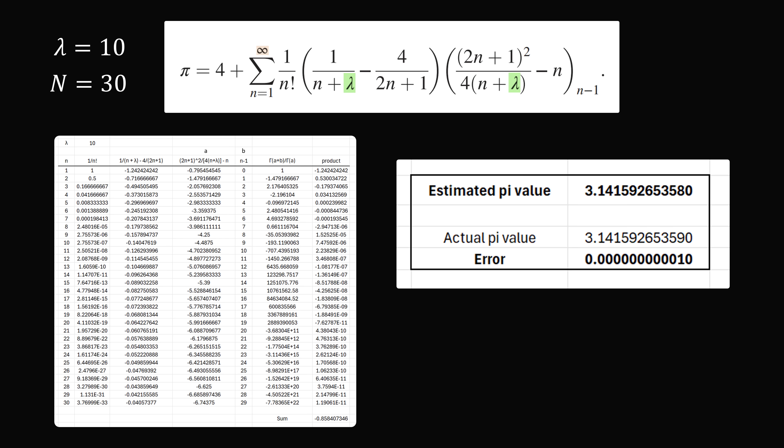With lambda equal to 10 and n equal to 30, we get an accurate value of pi to 10 digits. We only needed 30 terms to get pi to 10 digits.